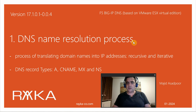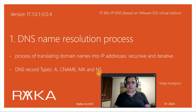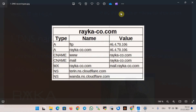This is required to understand the F5 BIG-IP DNS process. First I will introduce different DNS record types — especially the A record, CNAME record, MX record, and Name Server record — and then we will discuss how DNS servers use two methods, recursive and iterative, to resolve names into IP addresses.